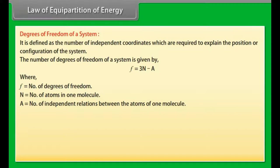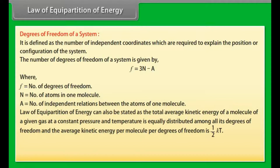Law of equipartition of energy can also be stated as: the total average kinetic energy of a molecule of a given gas at constant pressure and temperature is equally distributed among all its degrees of freedom, and the average kinetic energy per molecule per degree of freedom is ½KT, where T equals temperature of gas.